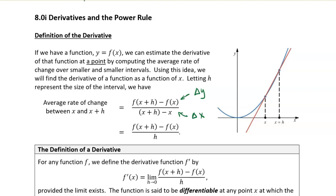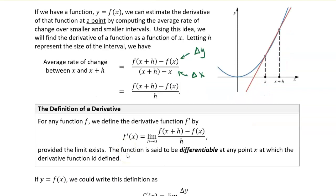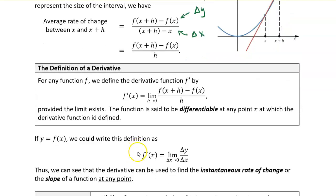It's rise over run, which is just slope. So the derivative of a function is essentially an instantaneous slope — it's the instantaneous rate of change of a function. And we define the derivative to be the limit as h goes to zero of this average rate of change. So it's important to understand the derivative as instantaneous rate of change, or the slope of the function at any point.